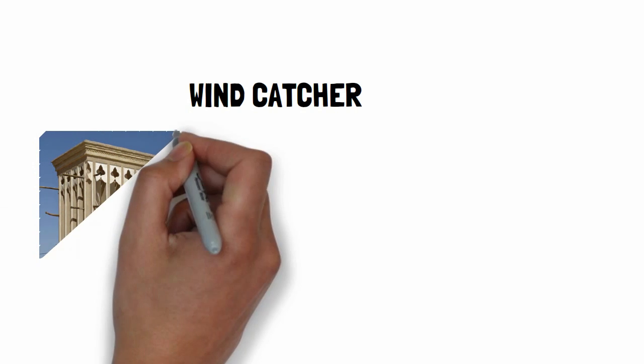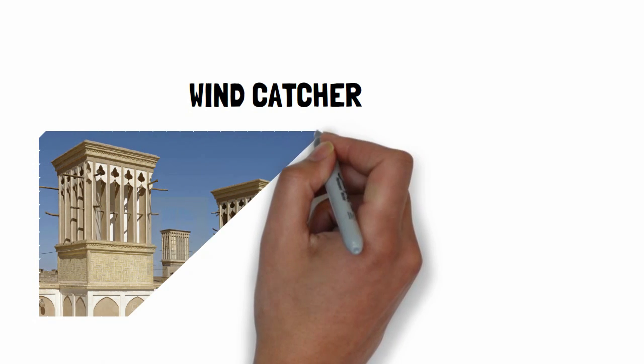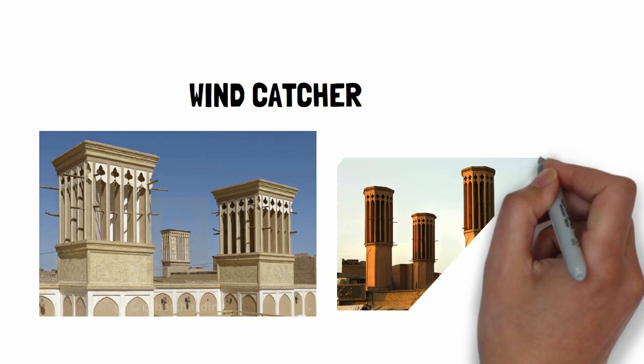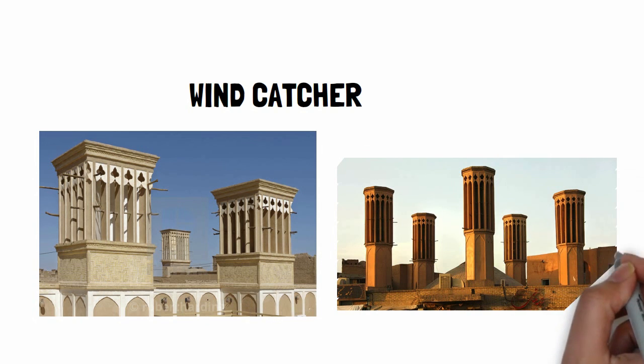Wind catcher is a traditional cooling technique that has been used in hot climates. It is a chimney-like structure constructed on a rooftop. It catches cooler breeze that prevails at a higher level above the ground and directs it into the building.